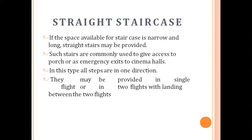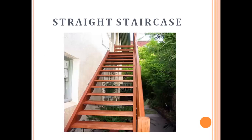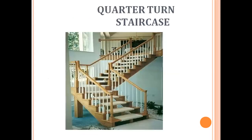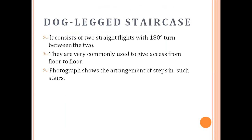The straight stair is provided when we have very limited space and are unable to provide two flights. The quarter turn stair can be provided when there is more space. The dog leg stair is an example of a quarter-turn stair; it consists of two straight flights with a 180-degree turn, and its shape looks like a dog's leg, which is why it is called a dog leg stair.